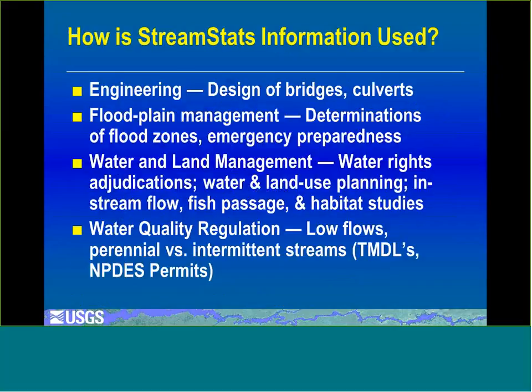StreamStats is used for engineering in the design of bridges, culverts, and other structures. It's used for floodplain management and determinations of flood zones and for emergency preparedness. It's used in water and land management for water rights adjudications, for water and land use planning, for determining in-stream flow needs and fish passage and habitat studies, and also for water quality regulation — determining low flows for point discharges and determining perennial versus intermittent streams.